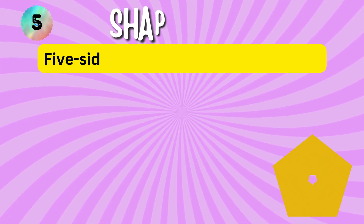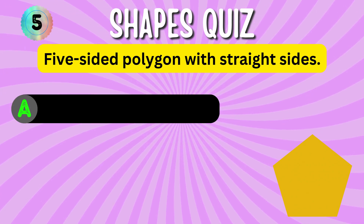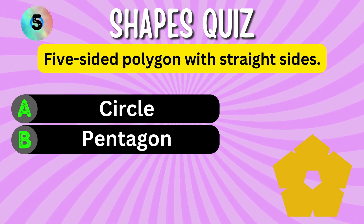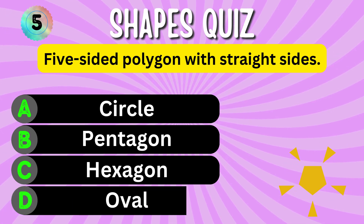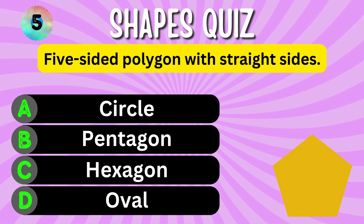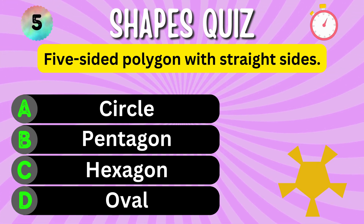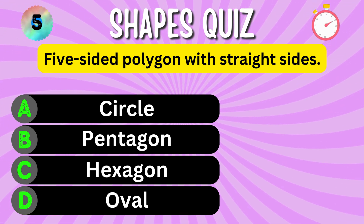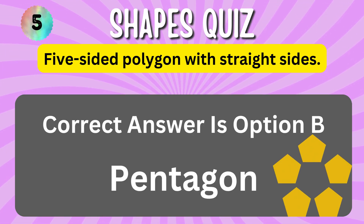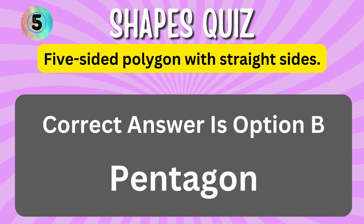A five-sided polygon with straight sides. Option A. Option B. Option C. Option D. You have 5 seconds to choose the correct answer. Your time starts now. The correct answer is Option B, Pentagon.